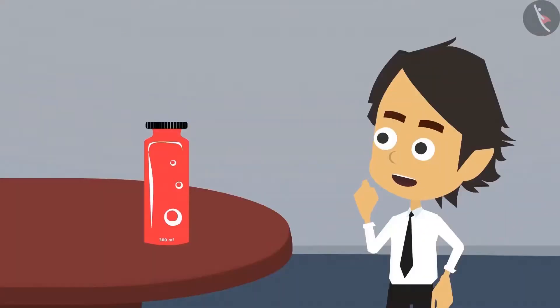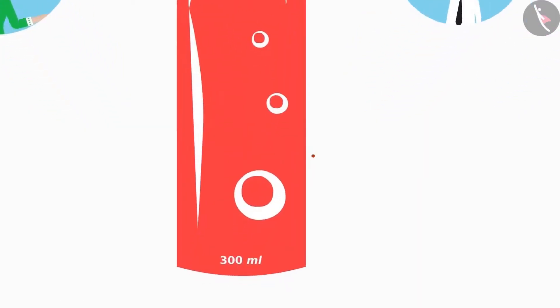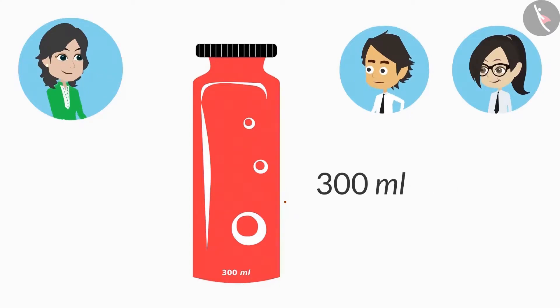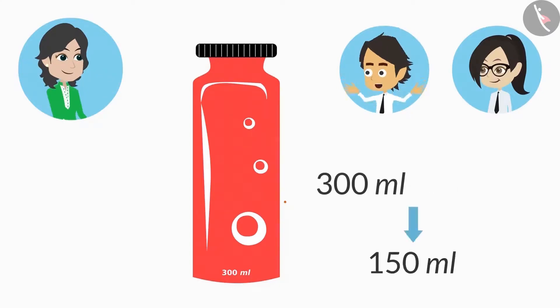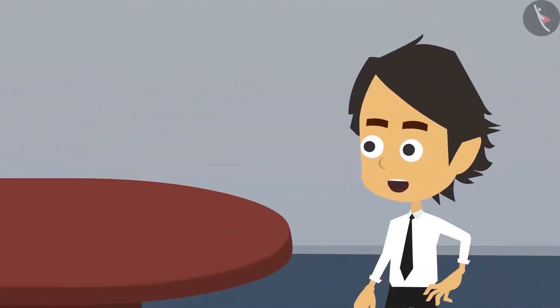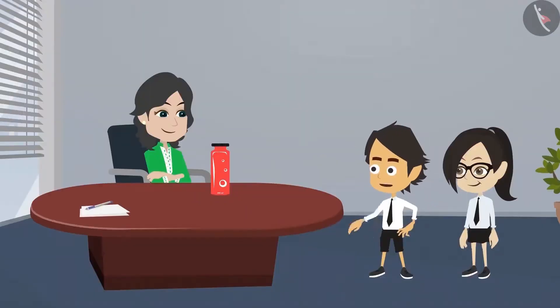But I cannot see. Show it to me. See, here it says that this bottle has 300 milliliters of buttermilk. We use ml to write milliliter. Half of the 300 ml will be 150 ml. Which means if we divide the buttermilk in two equal halves, we both will get 150 ml each.